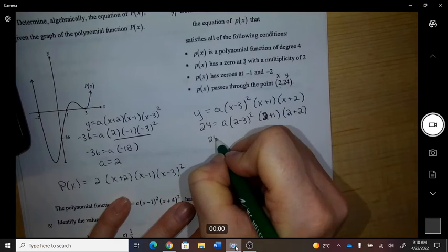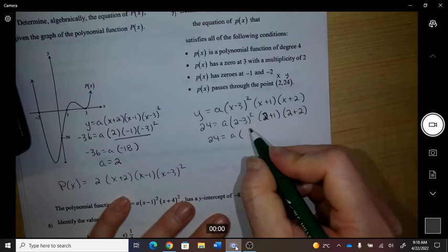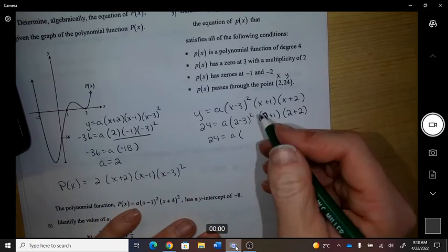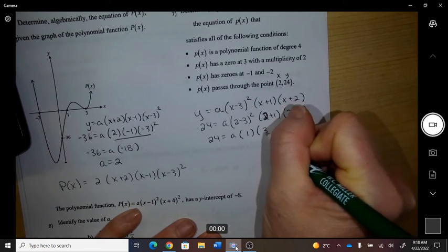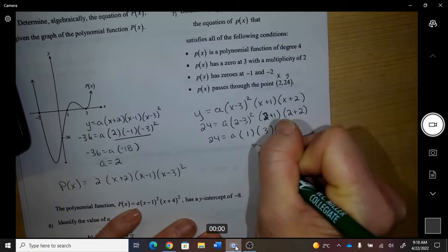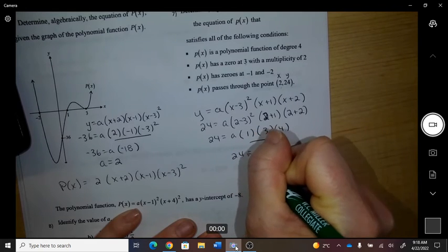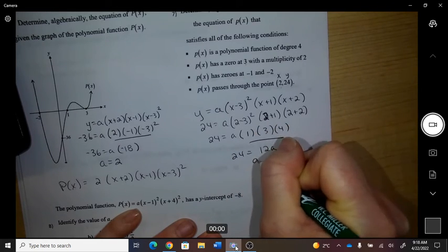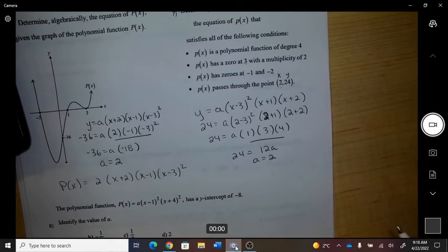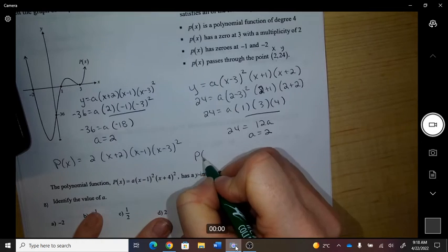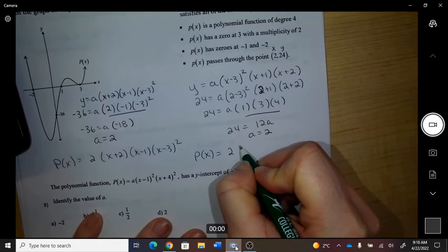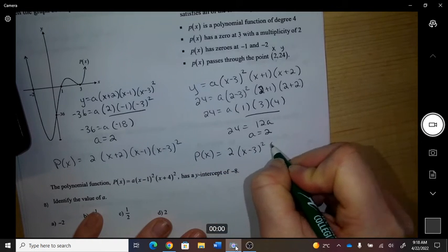Okay, so this is negative 1 squared, so 1. 2 plus 1 is 3, 4. So all that multiplies to 12, so therefore a equals 2. So the function is p of x equals 2, and then the list of my factors.